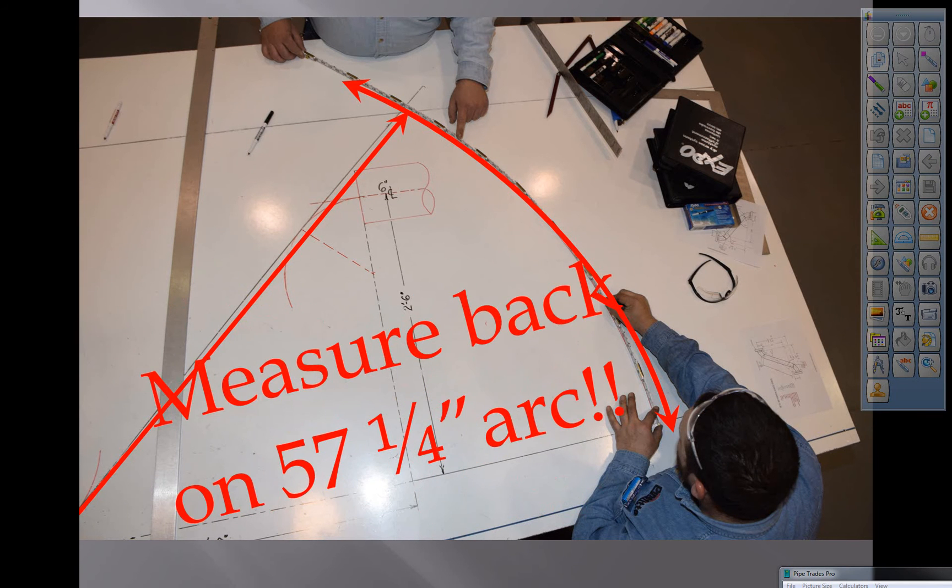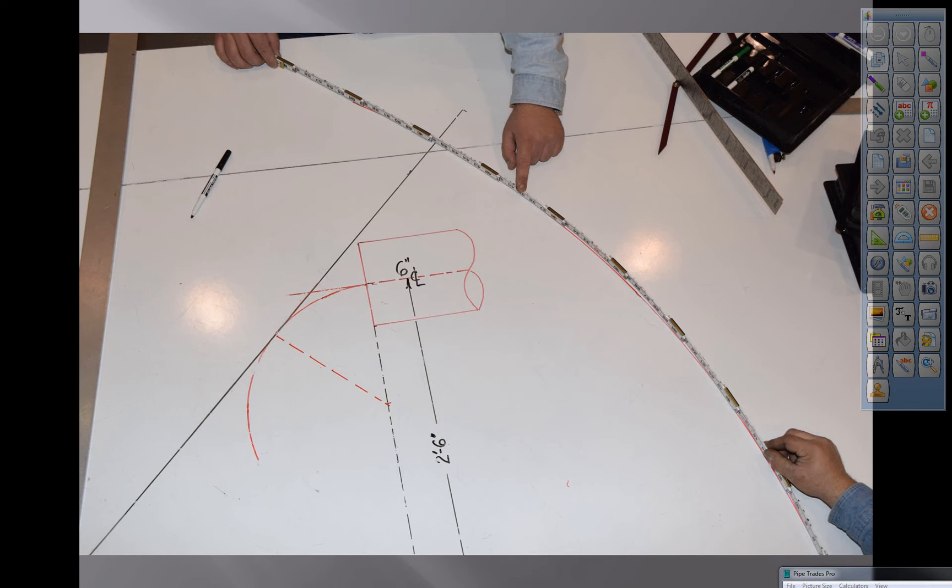We're going to measure the back on the 57 and a quarter arc with the stick rule. The stick rule bends perfectly to fit over that arc. We're going to pull a measurement off of that. This is very accurate. Measure the back on the 57 and a quarter arc. Measure the back on the 57 and a quarter inch. Your layout should look like that.